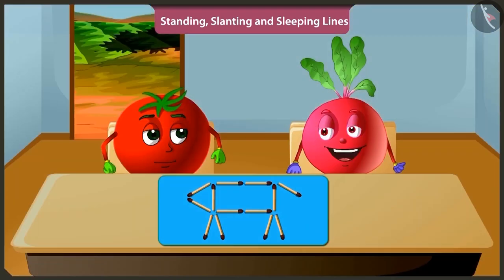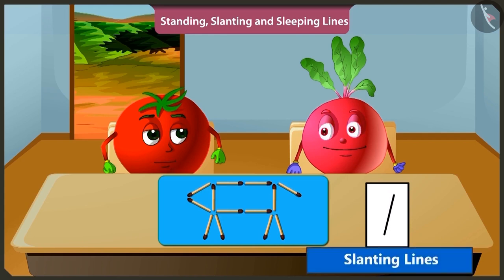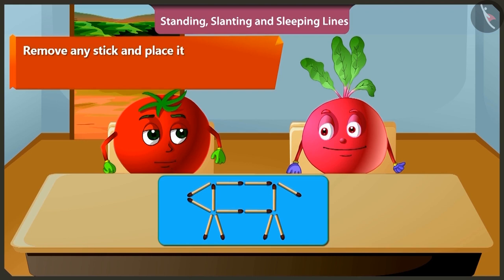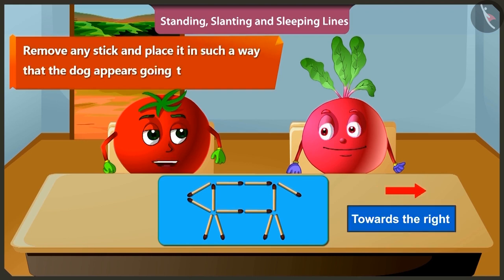Hey, to make the legs of the dog, the matchsticks are not standing but slanting. Hmm, I didn't understand. Bittu, even if the line is slightly oblique, it is called slanting. Yes, understood. But where is the game? Wait. I'll tell you. Which direction do you think the dog is going? It is going towards the left. Now you have to remove any stick and place it in such a way that the dog appears going towards the right.